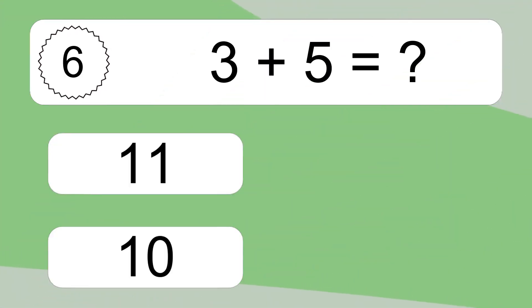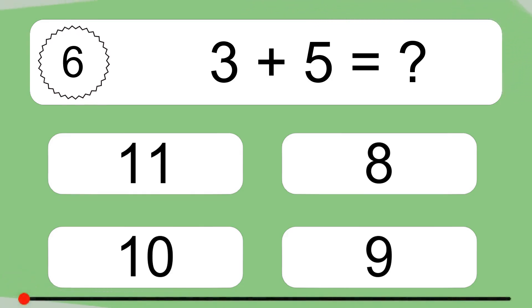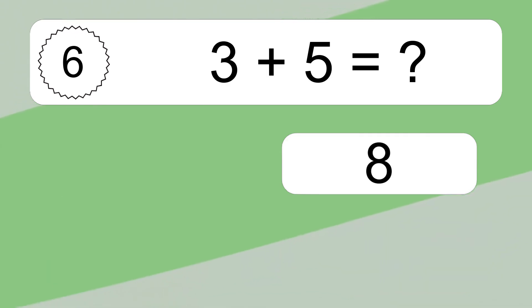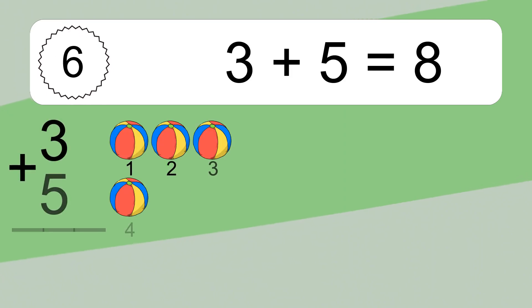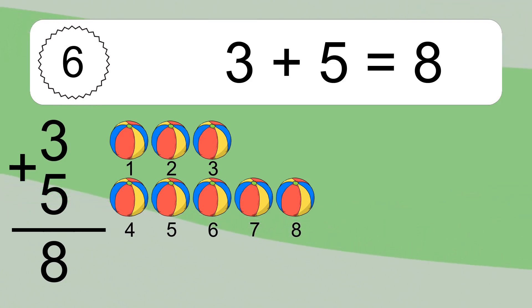3 plus 5 equals what? 3 plus 5 equals 8. Let's count it. 1, 2, 3, 4, 5, 6, 7, 8.